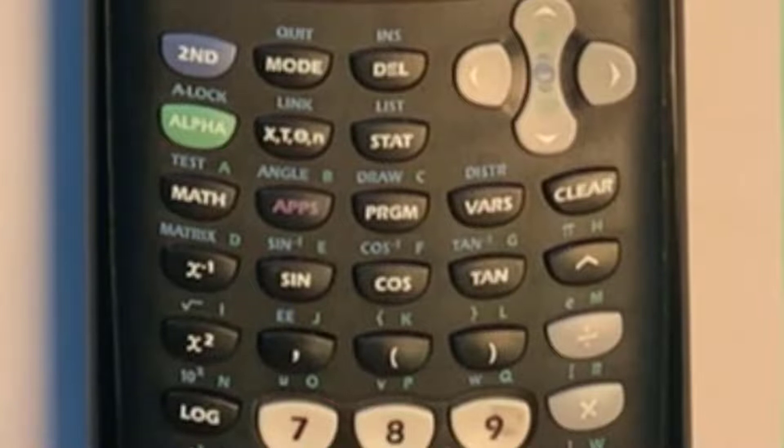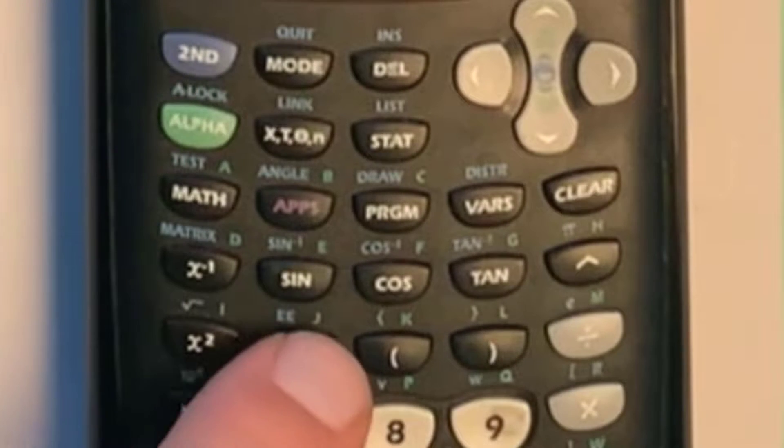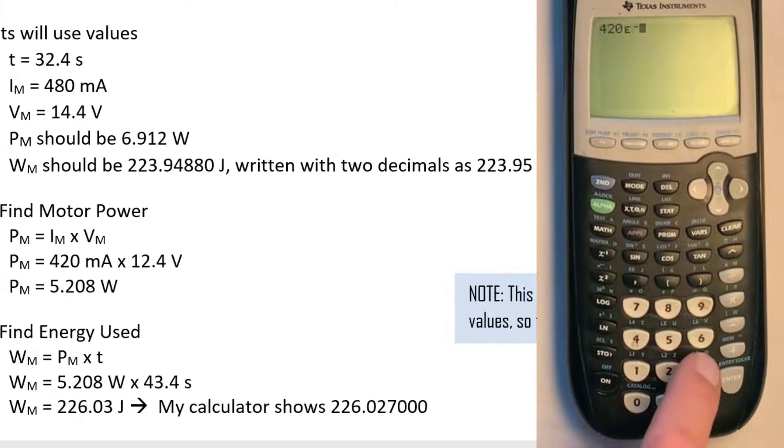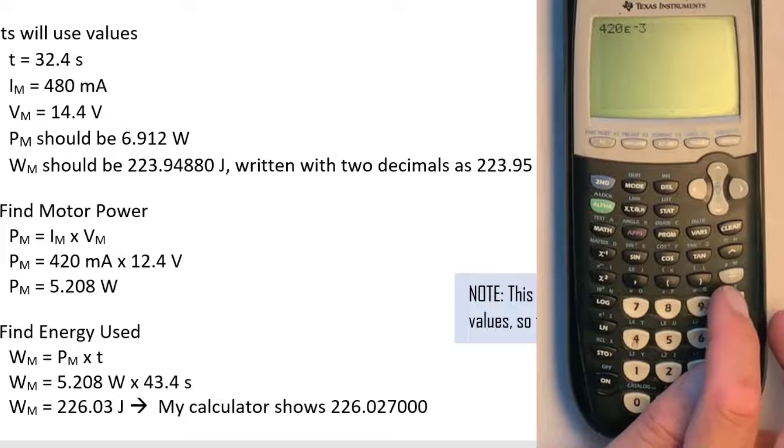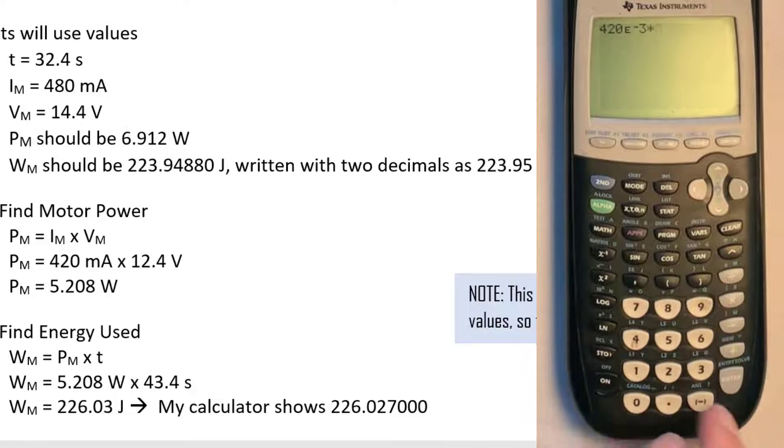There's a function for engineering or scientific notation, and in my calculator it's a double E. Some other calculators have a 10 to the X. So to access that I'm going to hit second function and then double E. I'm going to do minus 3 because it's milli. Now I have to multiply that by 12.4. Now that's my power. So I've got 5.208 watts.